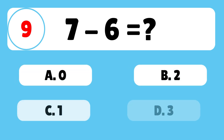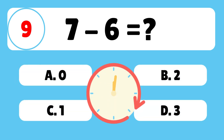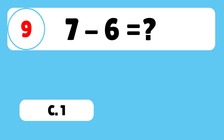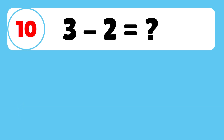Question 9: What is 7 minus 6? The answer is C. 7 minus 6 is equal to 1. Good job!